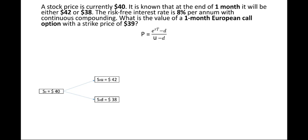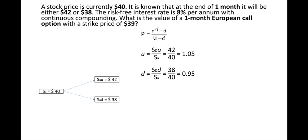The probability of upward movement p can be calculated using the formula: e^(rT) − d divided by u − d. We calculate u as S0u / S0, which is 42/40 = 1.05. Similarly, d = S0d / S0 = 38/40 = 0.95.